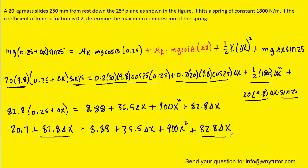Notice on both sides we have a term of 82.8 delta x, so we can cancel that out. Let's subtract 20.7 over to the right side. And then we're left with a quadratic equation, so we could use the quadratic formula to solve for delta x.